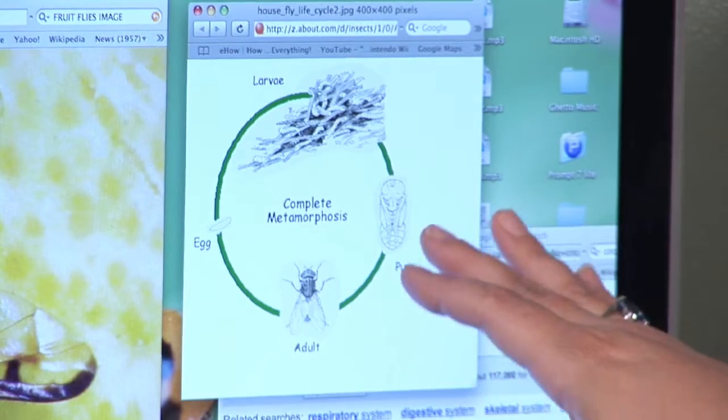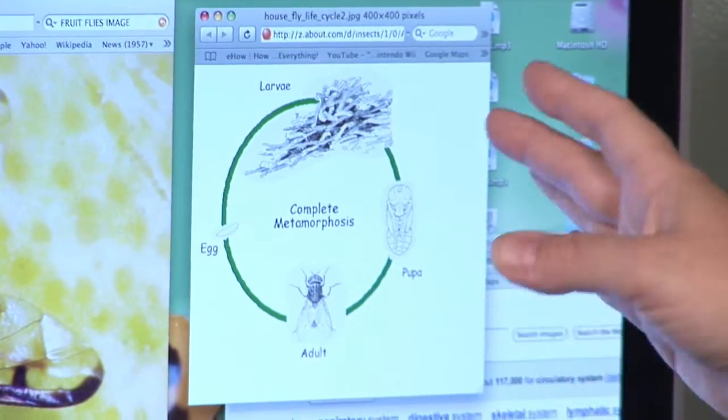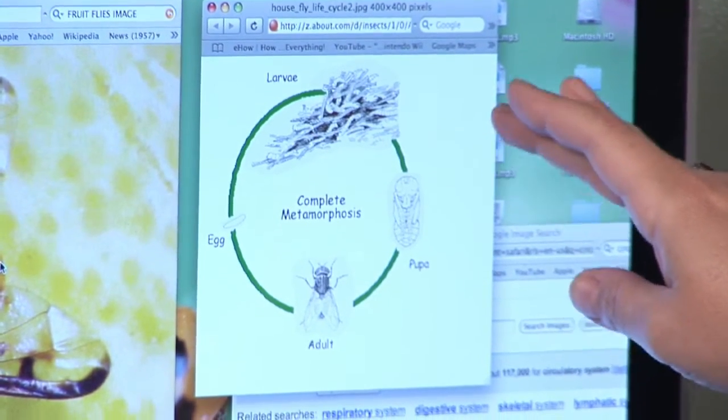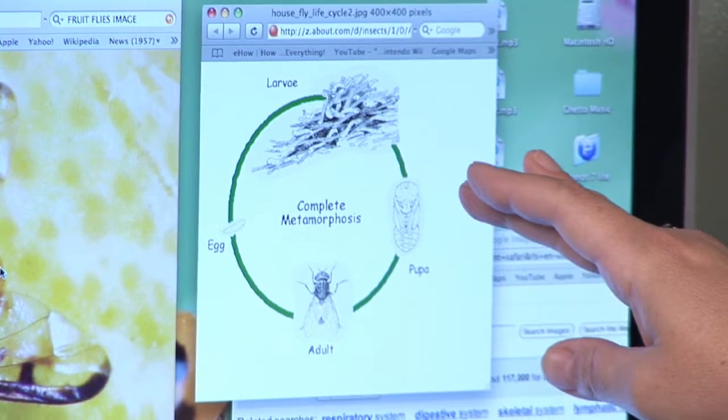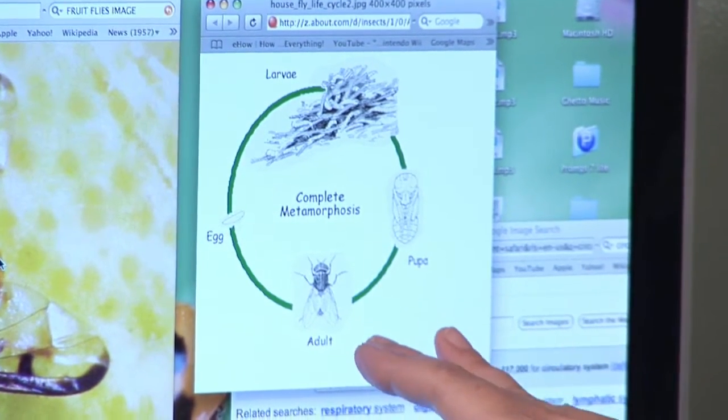Then it will turn into a pupa. This is the point where it stops eating. It's actually developing sort of like a cocoon, again, if we're comparing it to butterfly metamorphosis. Then, through that process, it will actually develop its legs, its wings, and everything it needs to become an adult fruit fly.